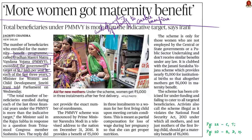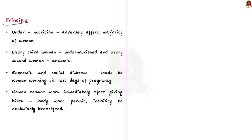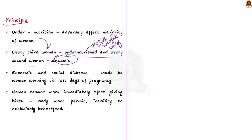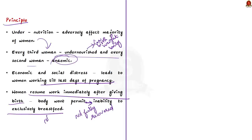Let us take this as an opportunity to learn about Pradhan Mantri Matru Vandana Yojana (PMMVY). In India, every third woman is undernourished and every second woman is anemic. An undernourished mother almost inevitably gives birth to a low birth weight baby. Due to economic and social distress, many women continue to work right up to the last days of their pregnancy and resume working soon after childbirth, preventing their bodies from fully recovering and impairing their ability to exclusively breastfeed their infant in the first six months. Considering all these situations, PMMVY was introduced in 2017 by the Ministry of Women and Child Development.